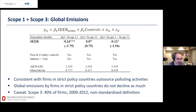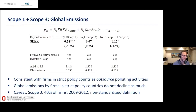Since scope 3 is only available at the global level and only for some firms, we first repeat our global emissions regression for this subset. We find that for this subset, these firms use about 24% less scope 1 emissions — somewhat more than the 20% found earlier. So they emit less at home. Now the question is: do they substitute along the supply chain?